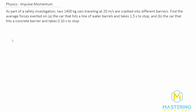Welcome to Mastering Solutions. This is another momentum problem where they want us to compare two cars. They say that the mass of both cars, M1 and M2, are both 1,400 kilograms. And both the velocity of car 1 and the velocity of car 2 are traveling at 20 meters per second.